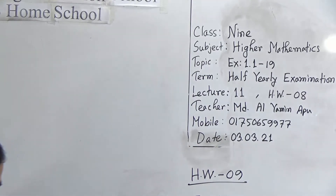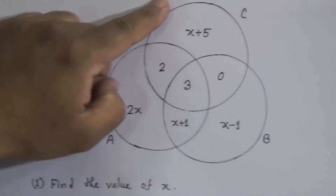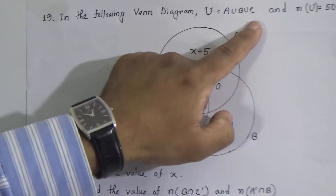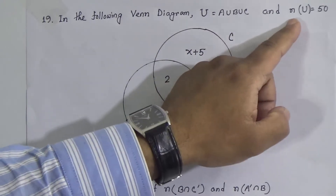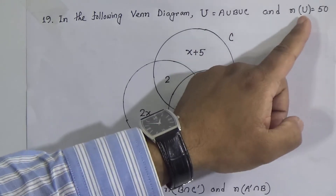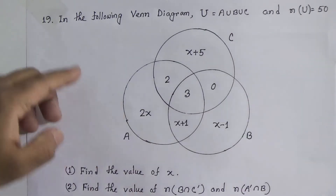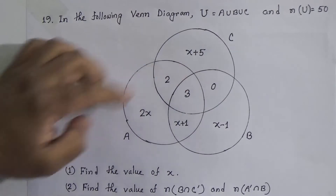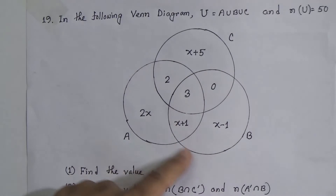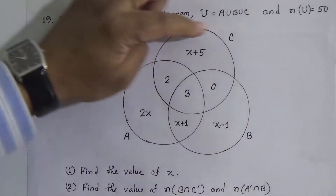Now my students, let's start our class. This is your question from your book page number 22, question number 19. In the following Venn diagram, U is the set of A union B union C, and the number of elements of U is equal to 50. This is our diagram — set A is this circle, B is this circle, and the upper circle is set C.